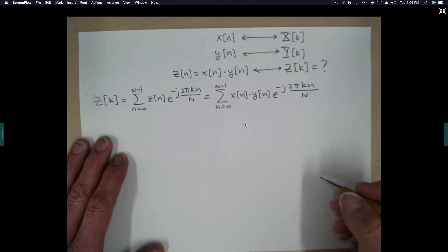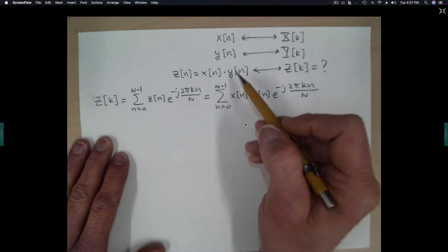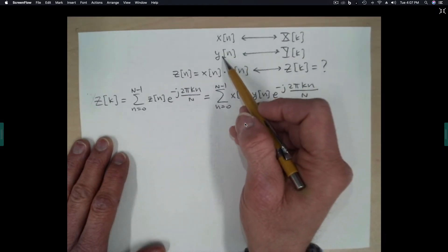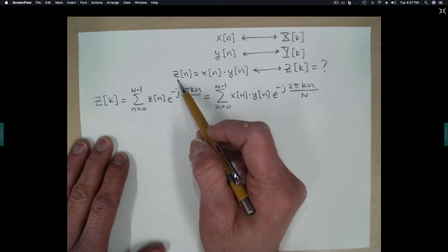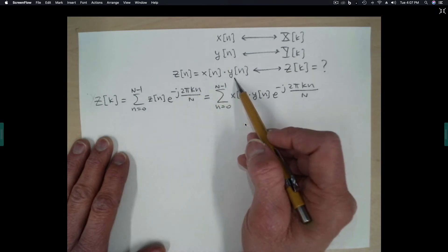Alright, in this video we're going to derive a Fourier transform property. Let's assume that we have two sequences, x and y, and define z to be the product of x and y.